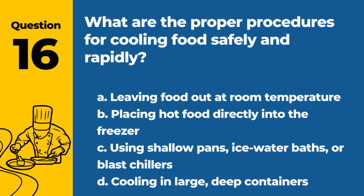Question 16. What are the proper procedures for cooling food safely and rapidly? A. Leaving food out at room temperature. B. Placing hot food directly into the freezer. C. Using shallow pans, ice water baths, or blast chillers. D. Cooling in large, deep containers. Answer: C. These methods allow for rapid and safe cooling of food, minimizing the time food spends in the temperature danger zone.